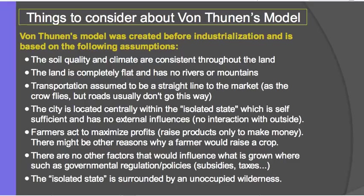Von Thunen also assumed that this isolated state is surrounded by unoccupied wilderness beyond the last ring. But as we know in the United States, a lot of communities — like cities along the East Coast such as New York City — bump up against each other, so there really is no unoccupied wilderness between some communities. It all kind of mashes together. So these are assumptions he made that are not necessarily true today, or even back then.